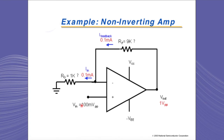Here is a numerical example for the non-inverting case. A 100 millivolt peak-to-peak signal is applied to the non-inverting input using the same resistor values: RG of 1 kΩ and RF of 9 kΩ. The ratio of the two resistors is 9, but we add a factor of 1, so the output voltage amplitude is 10 times larger than the input. The two signals are completely in phase, and the output signal is 1 volt peak-to-peak.